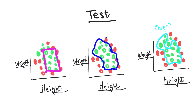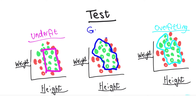We want the middle model — it captures the actual pattern in the data set without fitting to the noise. This model is going to do very well on the test set. It's probably not going to be perfect, but it captures the proper pattern rather than fitting to all the noise. So overfitting means fitting to the noise in the data set, which hurts test set performance. The underfit model did poorly on the training set, which is a bad sign, and also does poorly on the test set since it can't capture the pattern. We want the good fit — a balance between underfitting and overfitting.